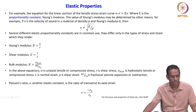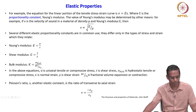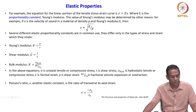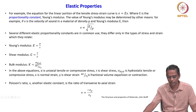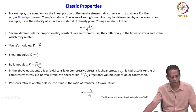Bulk modulus K is equal to sigma hydrostatic divided by the fractional change in volume. In the above equations, sigma is uniaxial tensile or compressive stress, tau is shear stress, and sigma hydrostatic is a hydrostatic tensile or compressive stress. Epsilon is normal strain, gamma is shear strain, and delta V by V naught is a fractional volume expansion or contraction.